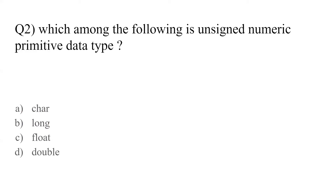Which among the following is unsigned numeric primitive data type? In Java we have two types of data types: signed and unsigned. Unsigned are those in which you can only save positive values, and signed numeric primitive data types are those in which you can save positive as well as negative. The answer is char — char is the unsigned numeric primitive data type in Java. Long, float and double are signed numeric primitive data types.